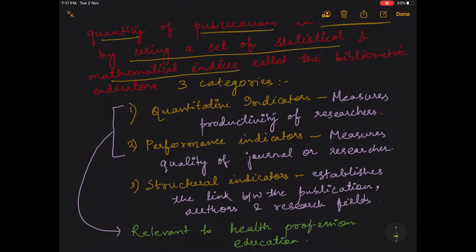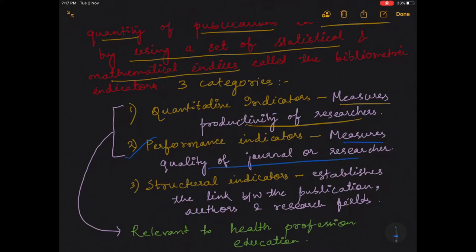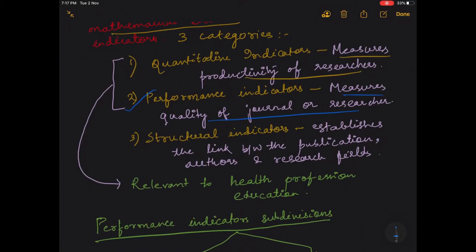It has got three categories. One is quantitative indicators which measure the productivity of researchers. Second is the performance indicators which measure the quality of journal or the researchers. And third is the structural indicator which establishes a link between the publication, authors, and research fields. Now this quantitative indicator and performance indicator, these two are relevant to the health profession education.